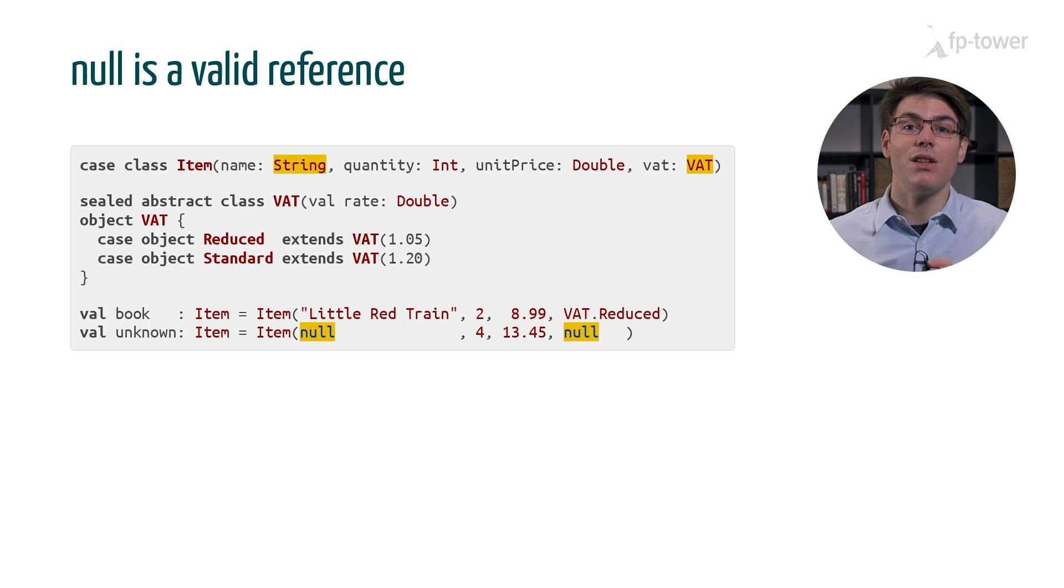As you can see, null is a valid value for both the name and VAT fields because String and VAT types are both classes. We can also define an item using null since it's a case class.